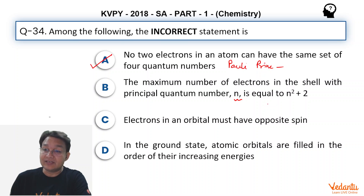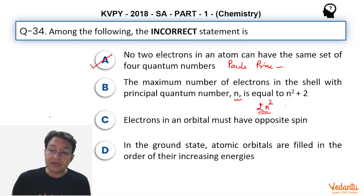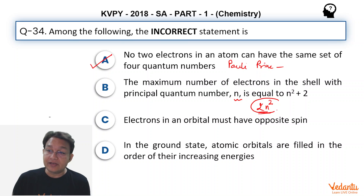No, it is indeed equal to 2n², where n² is the total number of orbitals in a shell with principal quantum number n. We multiply by 2 because each orbital can contain two electrons. So it is 2n², not n² + 2. That is a wrong statement.